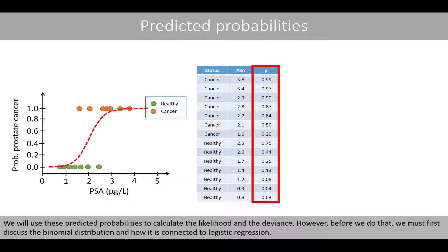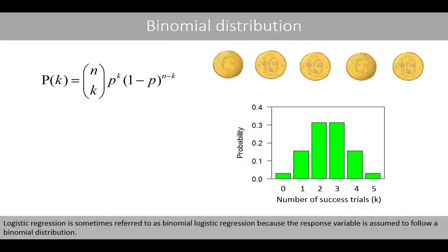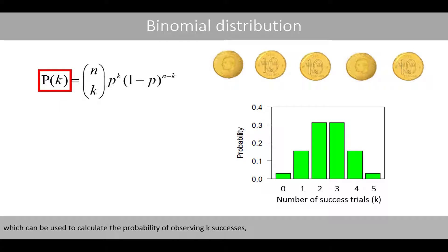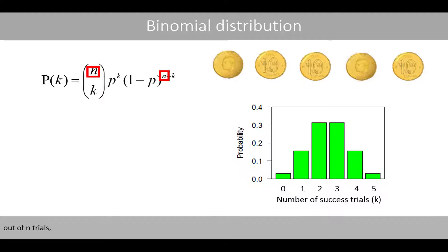Before we calculate the likelihood, we must discuss the binomial distribution and how it is connected to logistic regression. Logistic regression is sometimes referred to as binomial logistic regression because the response variable is assumed to follow the binomial distribution. The binomial probability mass function can be used to calculate the probability of observing k successes out of n trials, where p is the probability of success for a single trial.